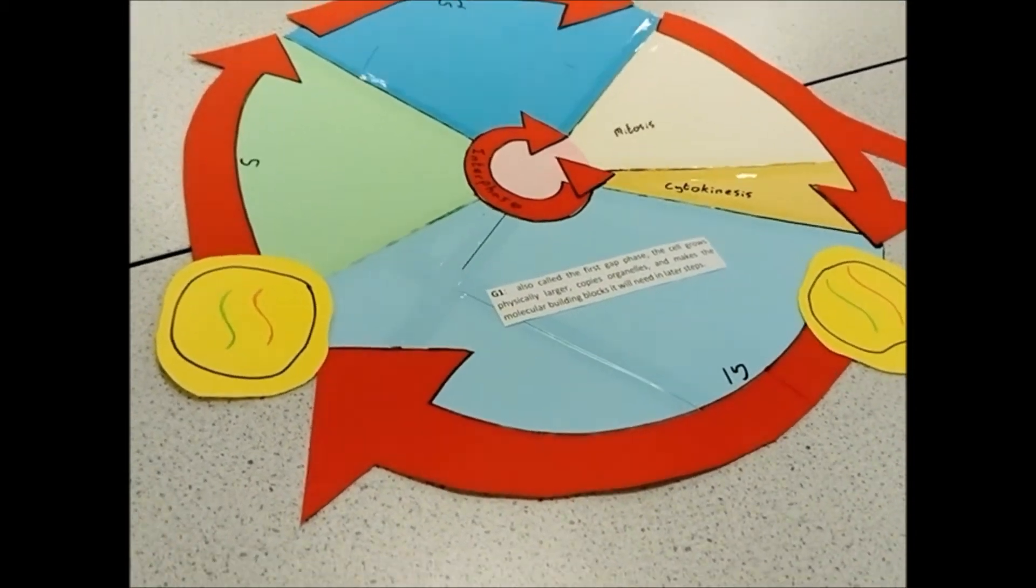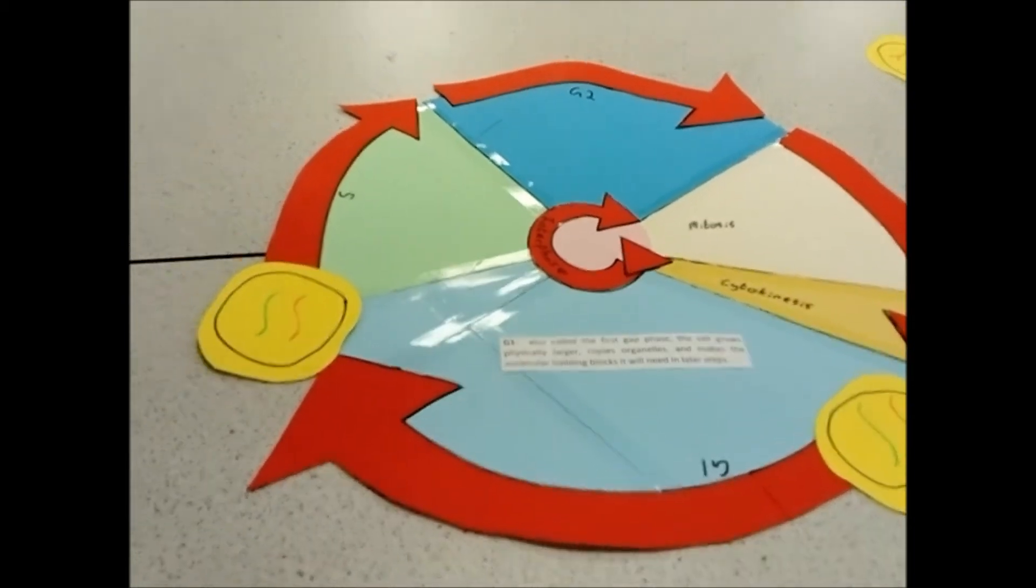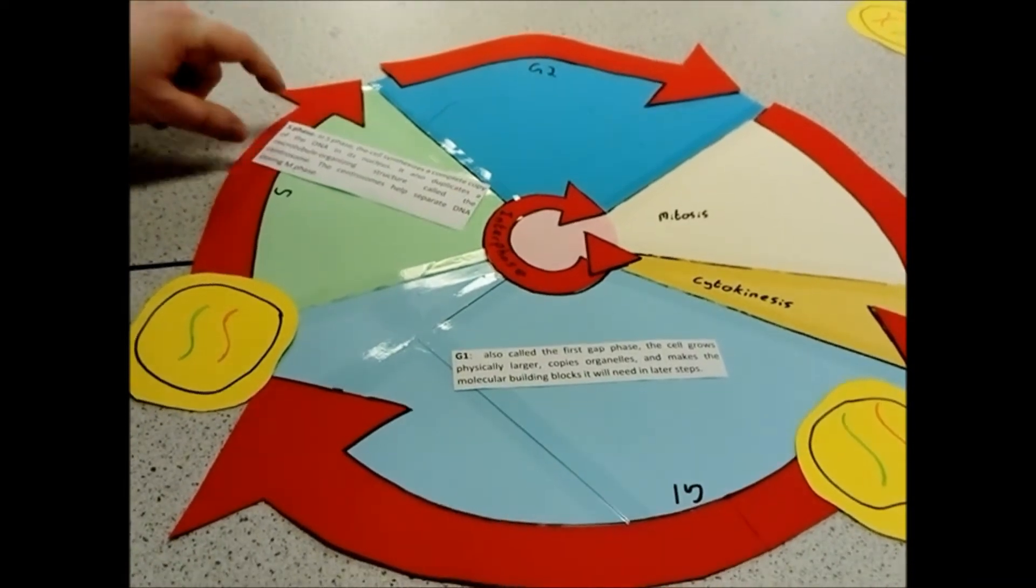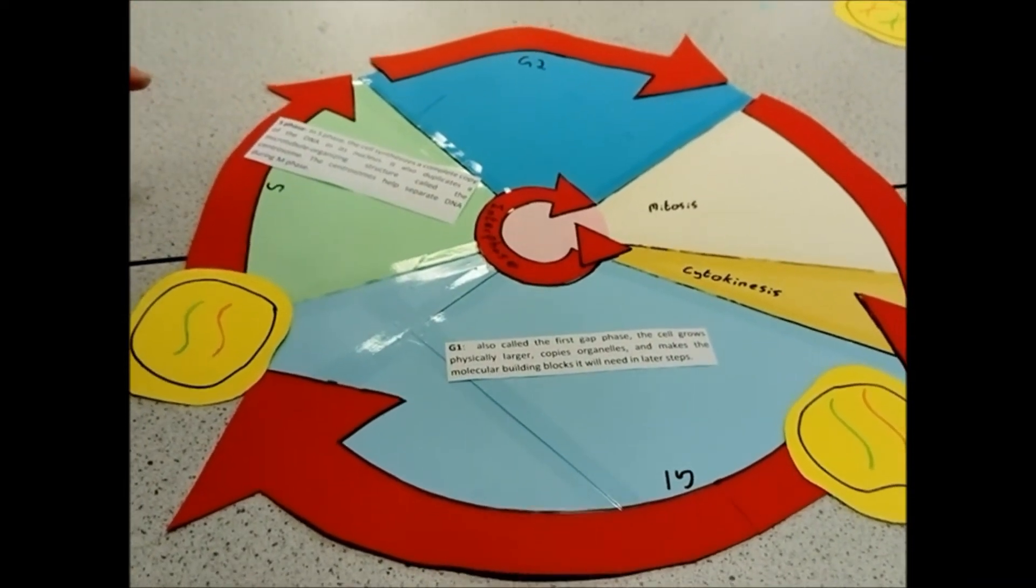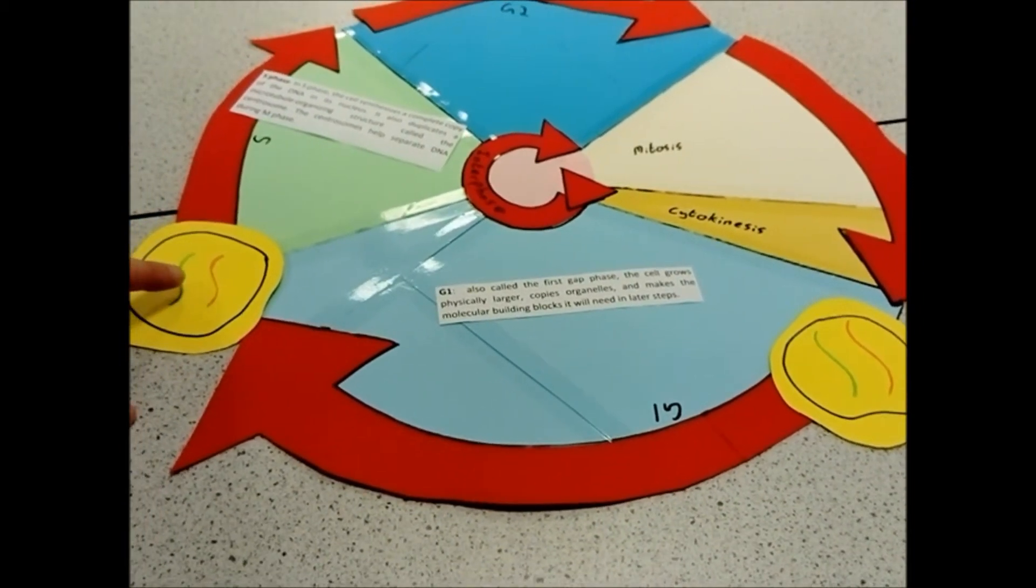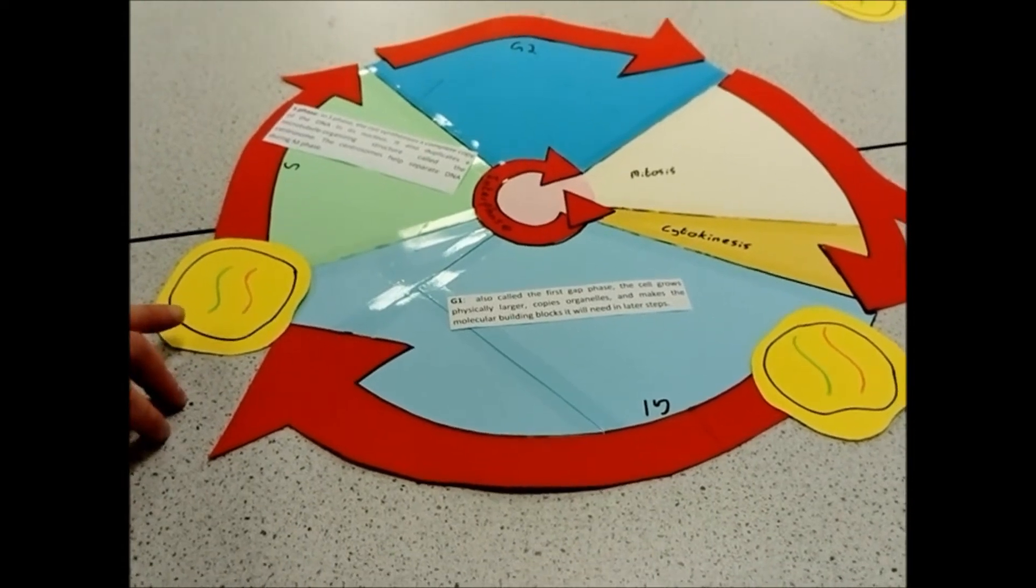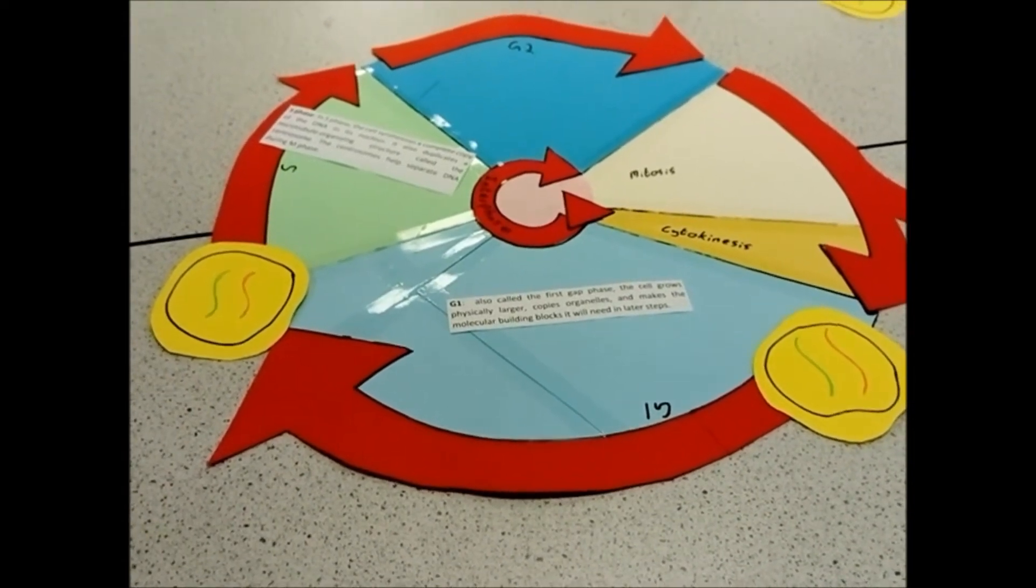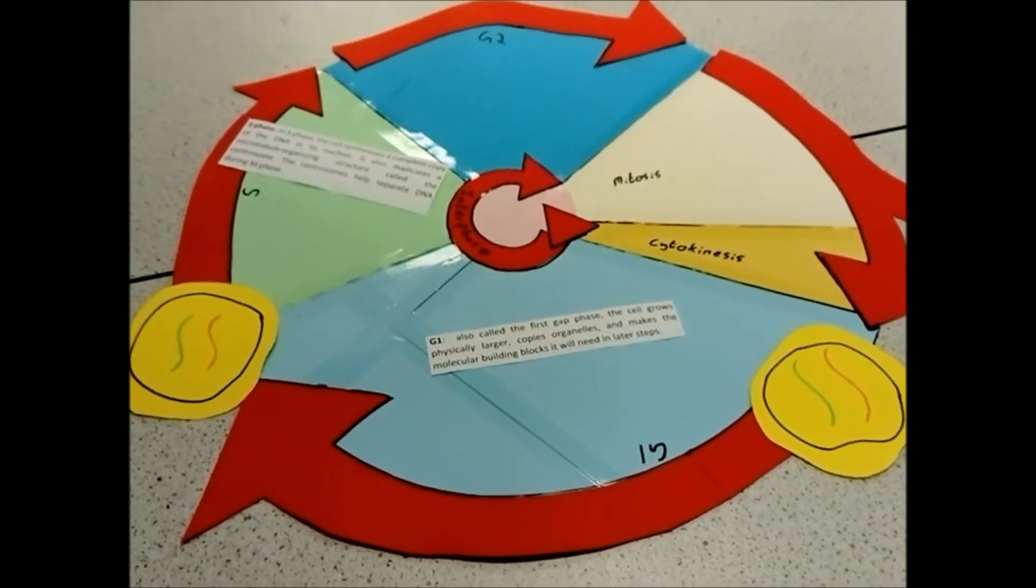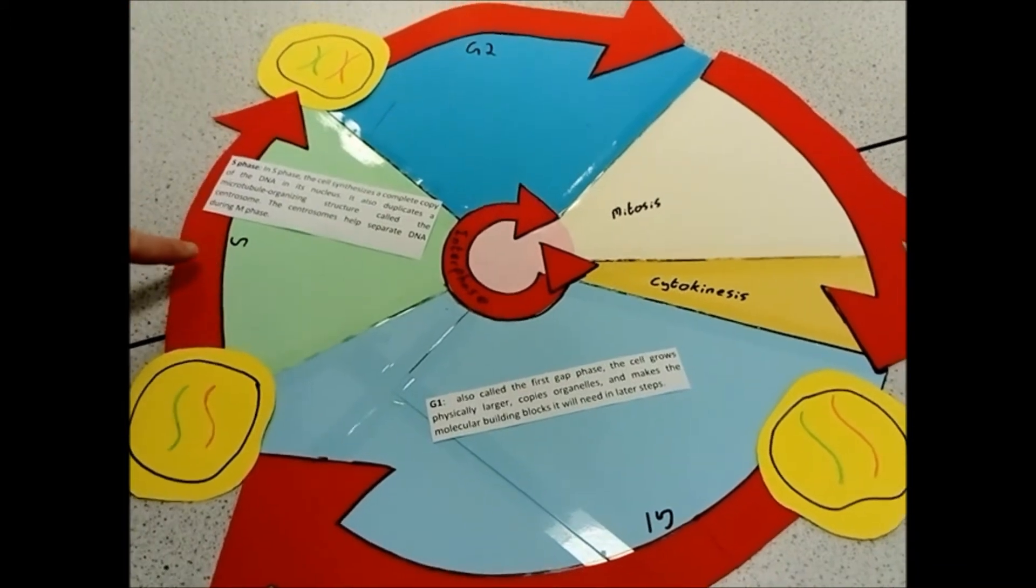After your G1 phase, you move into the S phase. The S phase is called the synthesis phase. During this point, this is where your DNA is copied. So, you're going to go, technically, from 46 chromosomes to 92 chromosomes, so 46 pairs of chromosomes. We copy the DNA in the S phase.